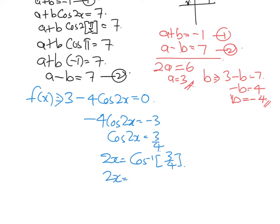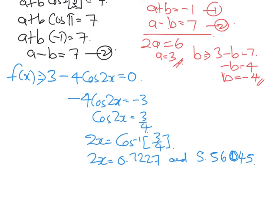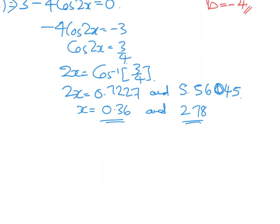Solving cos(2x) = 3/4: 2x = 0.7227, giving the other value as 5.5605. Dividing by 2: x = 0.7227/2 ≈ 0.36, and x = 5.5605/2 ≈ 2.78. Since x is between 0 and π, both 0.36 and 2.78 are valid values — these are the two x-coordinates.